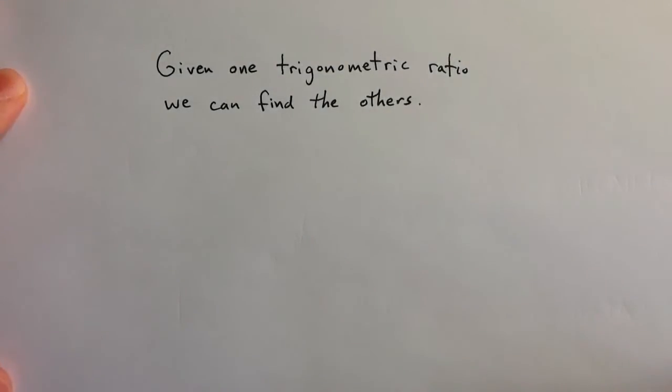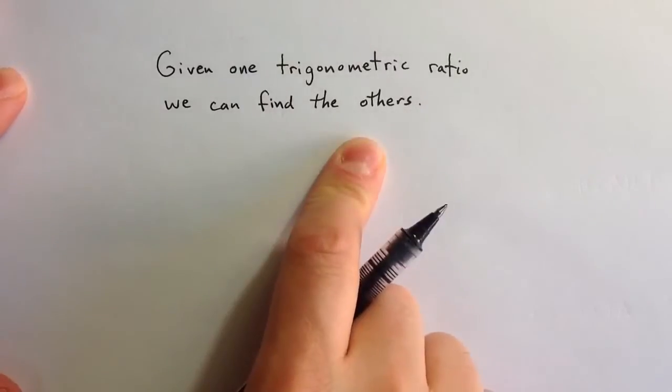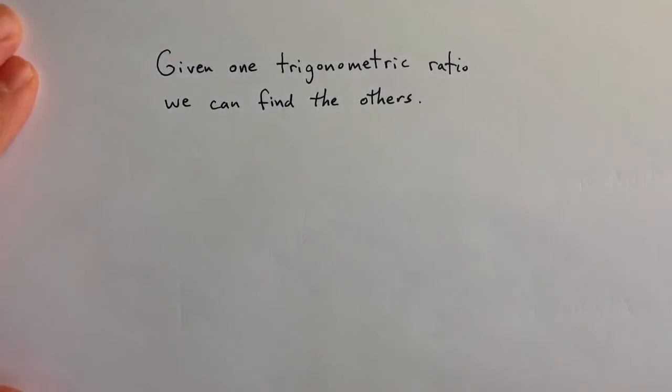Beyond just the reciprocal relationships, given any one trigonometric ratio, we can find the others. In fact, all six trigonometric ratios are related by the right triangle that defines them.